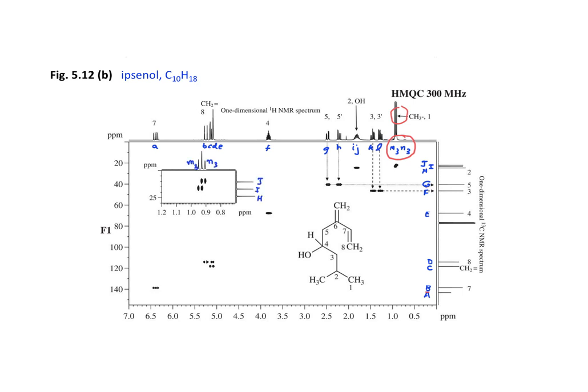If we look at the inset, which is simply an expansion that the operator can easily do, it is apparent that M3 is a doublet that correlates with carbon I, and N3 is another doublet that correlates with carbon J. We can then present this data in a column format — in one column we'll have the carbon-13 peaks, in the other column the proton peaks. In a publication, we report chemical shifts in parts per million, but for this exercise we'll use uppercase Roman letters for carbon and lowercase letters for proton.